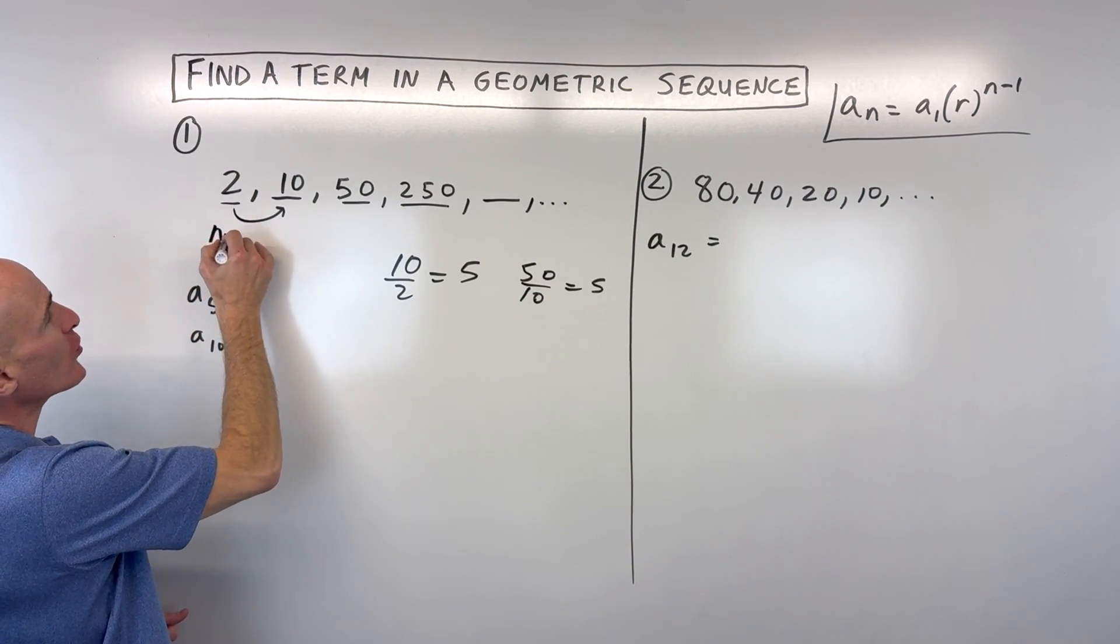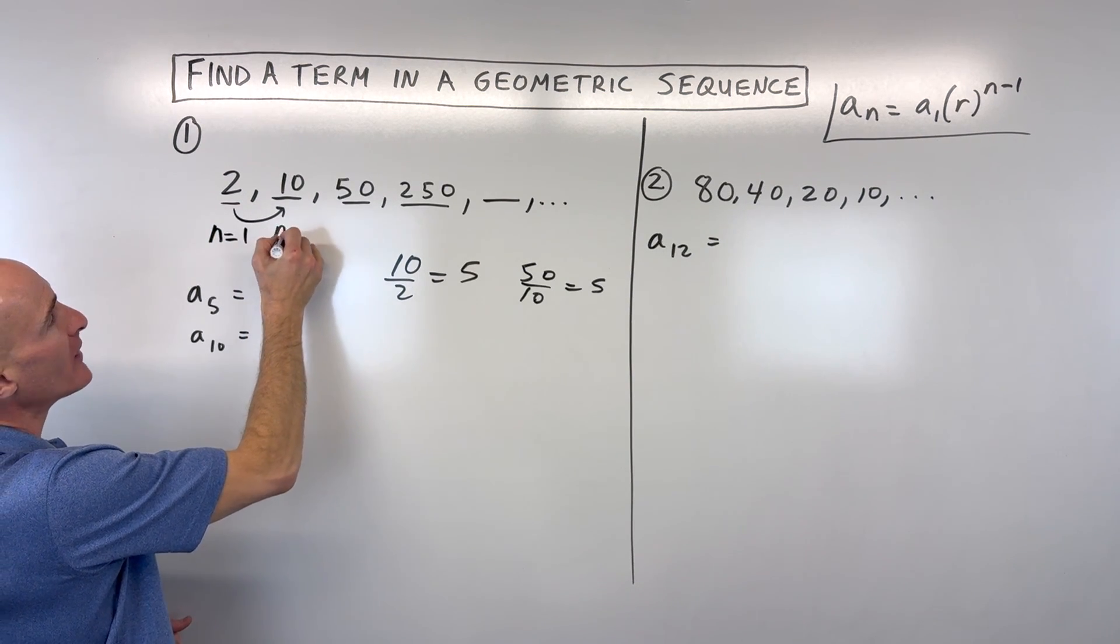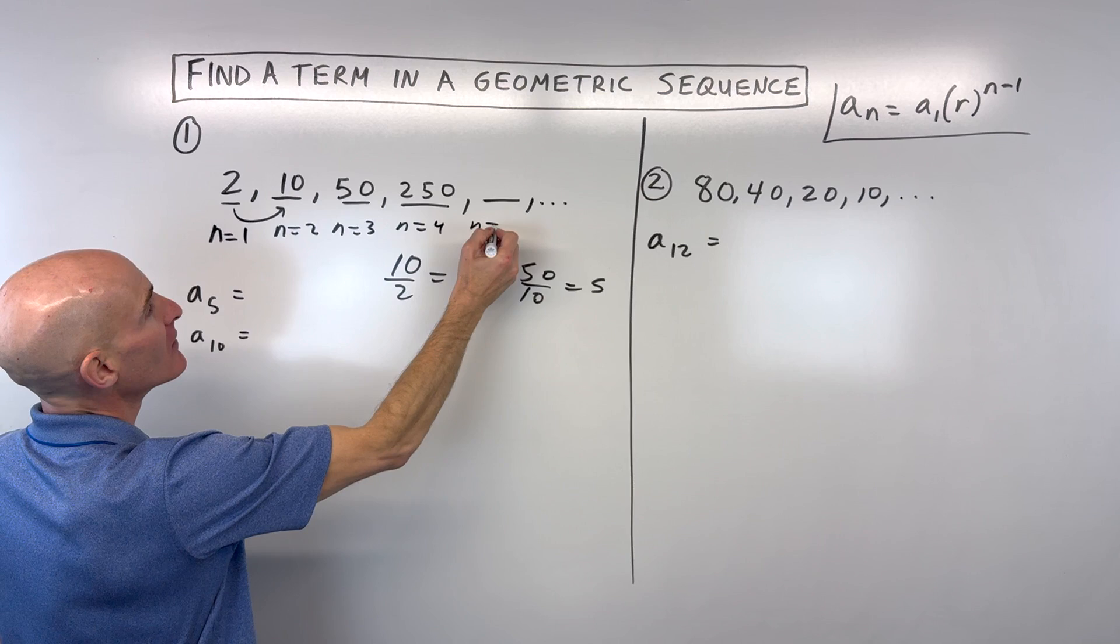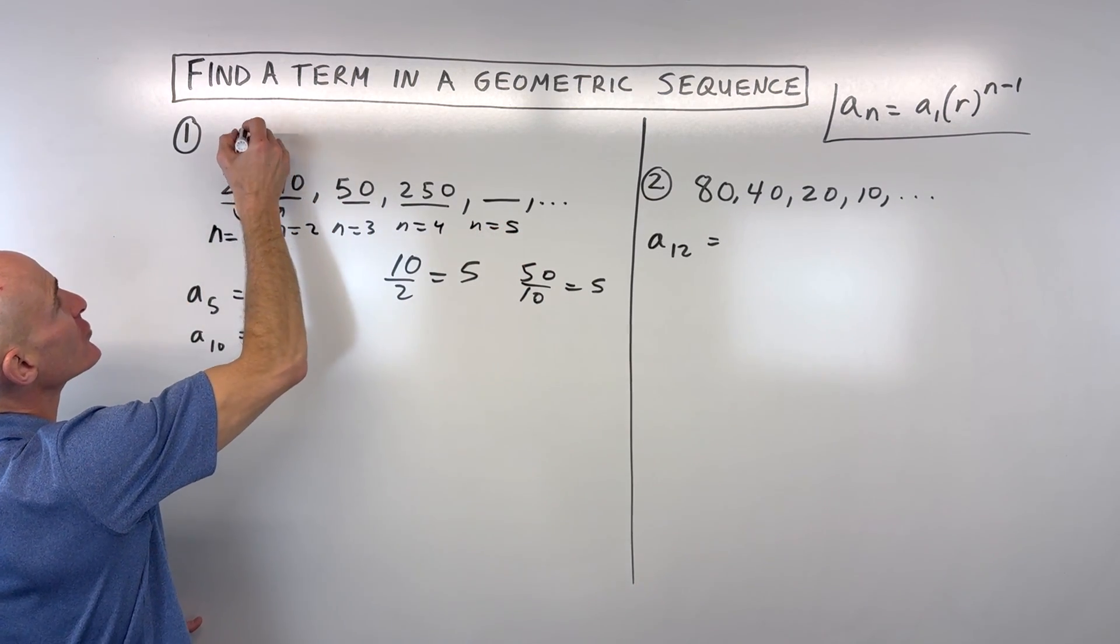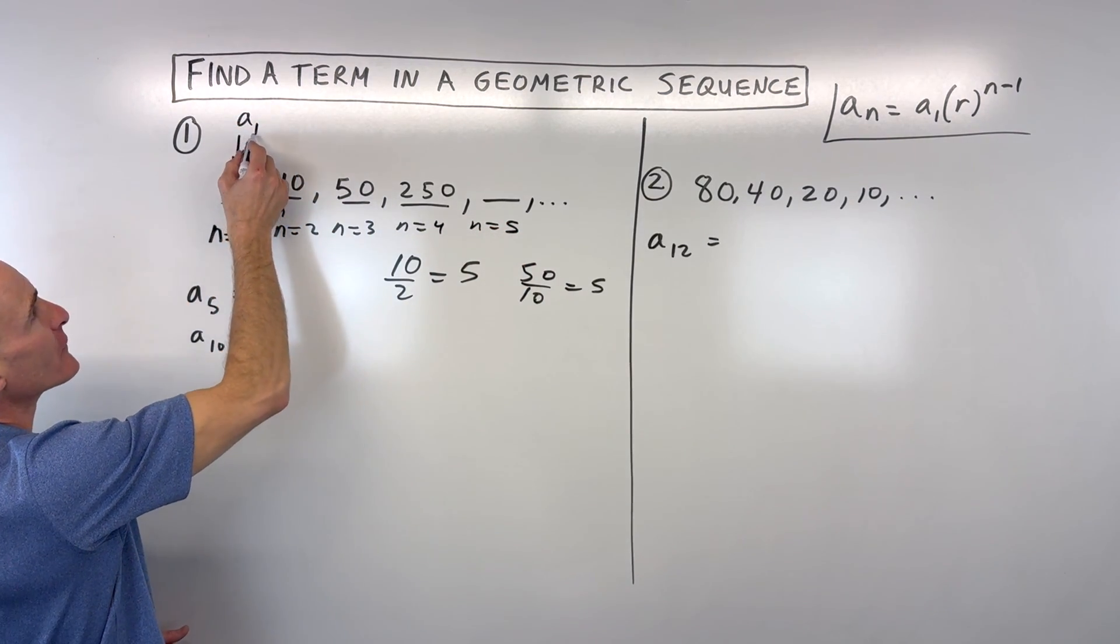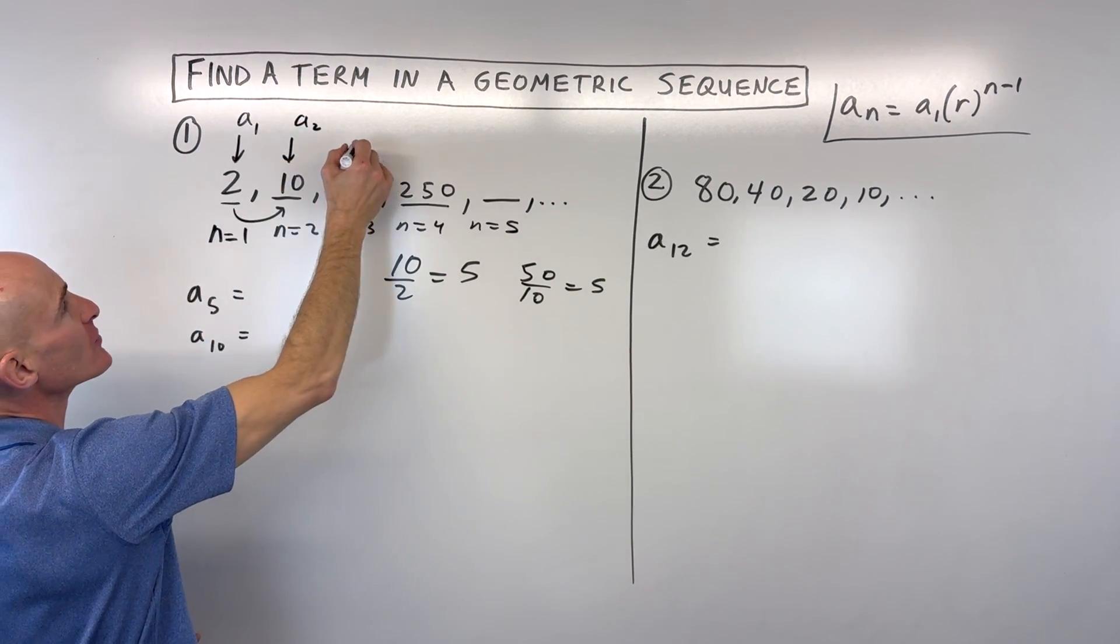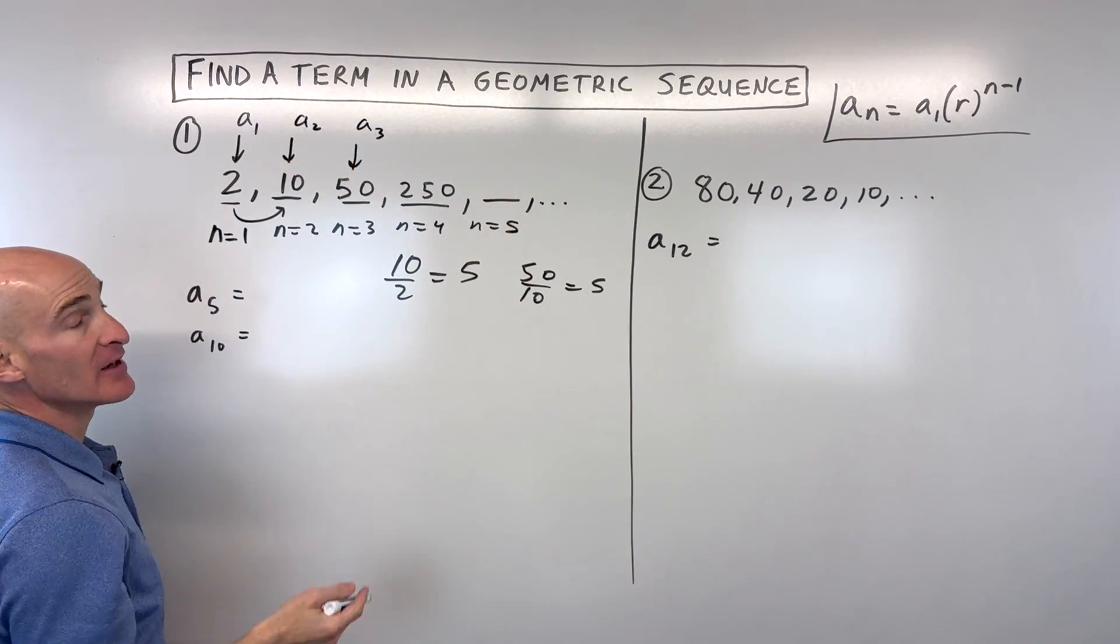So let's talk about the notation just real quick here. So this is n equals 1, n equals 2. That tells us what term we're on. But the value of the term, we call that a sub 1, like the first term in the sequence, or a sub 2, the value of the second term in the sequence, or a sub 3, et cetera.